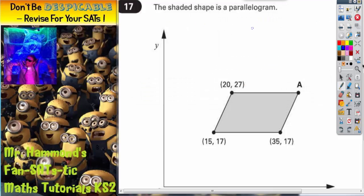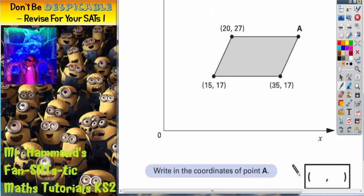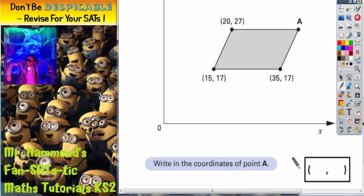Question 17. The shaded shape is a parallelogram. It looks like it's going to be something to do with coordinates. It says write in the coordinates of point A.